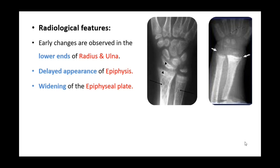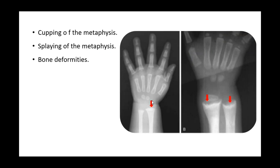Radiologically, there is widening of the epiphyseal plate, cupping of the metaphyses — where the metaphysis takes on a cup-like shape with irregular ends as cartilage cells create depth in the soft metaphysis — and splaying of the metaphyses, where the margins are displaced due to pressure from cartilage cells accumulating at the growth plate. Other bone deformities such as knock knee and bow leg are also observed.